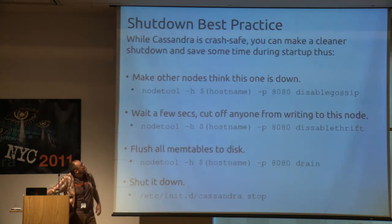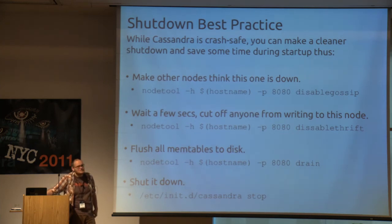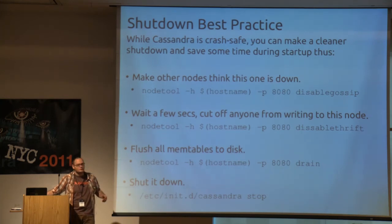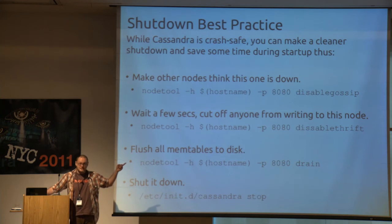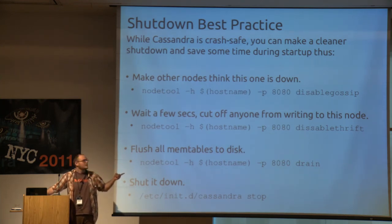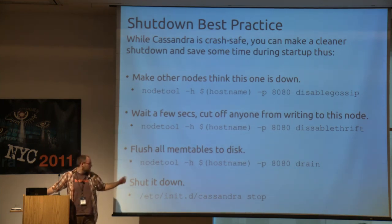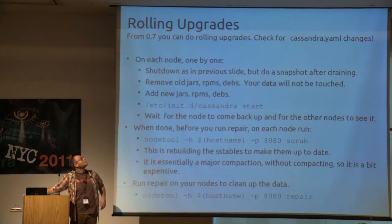Shutdown best practice — Cassandra is crash-safe, you can pull the plug and won't lose anything, but if you want to decrease the time it takes to bring the node back up so it doesn't have to read the commit log: stop gossip so all other nodes think it's down, stop Thrift so no one can write to it, then do a drain to flush everything to disk, then stop it. This saves time on startups, especially when doing rolling upgrades.